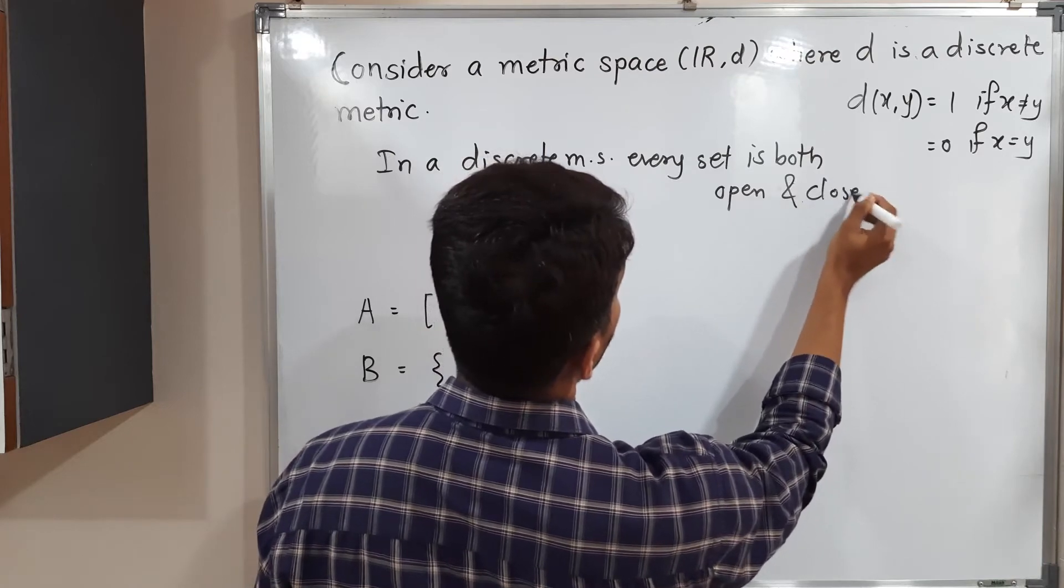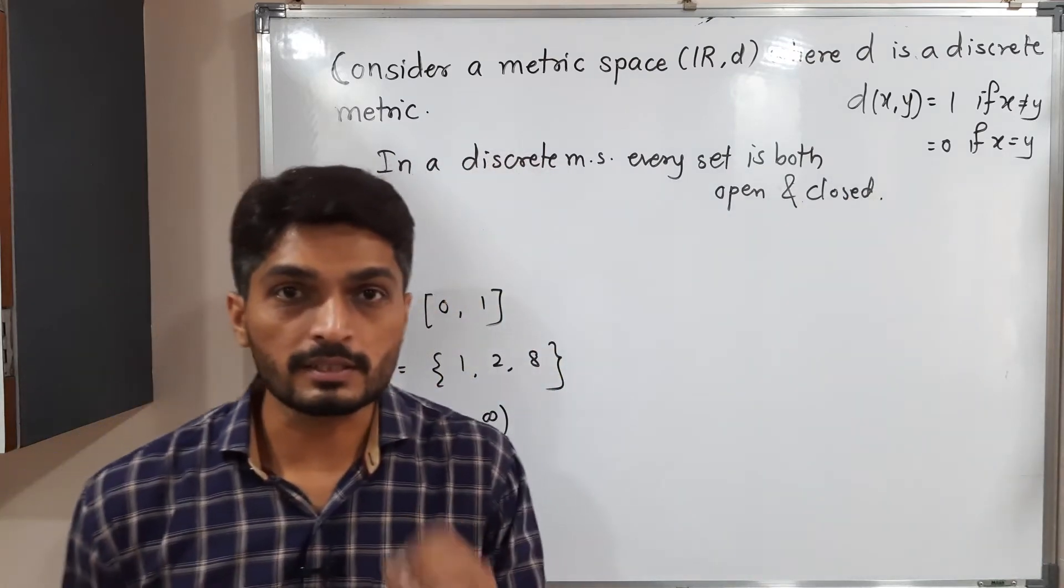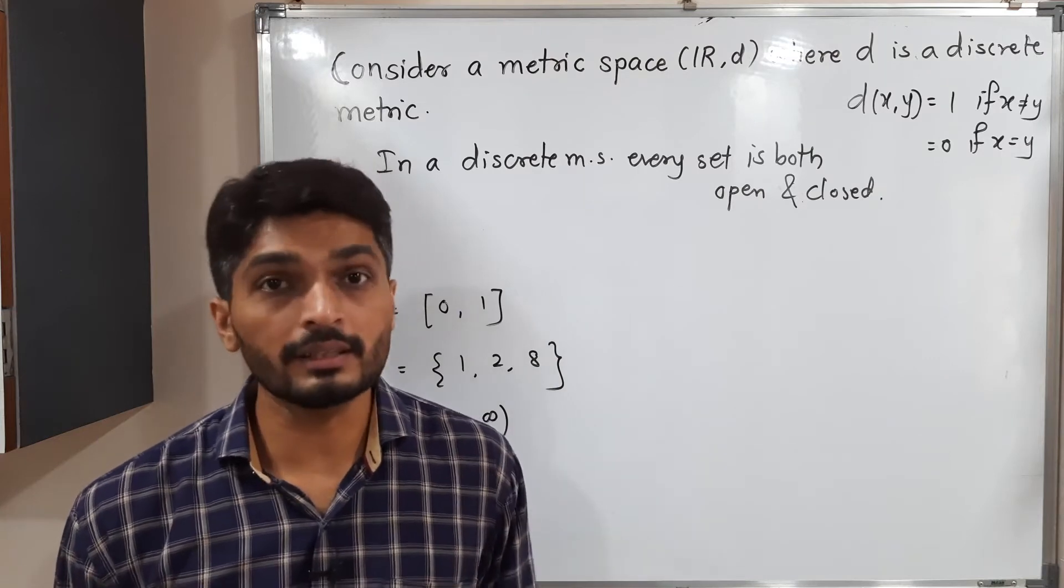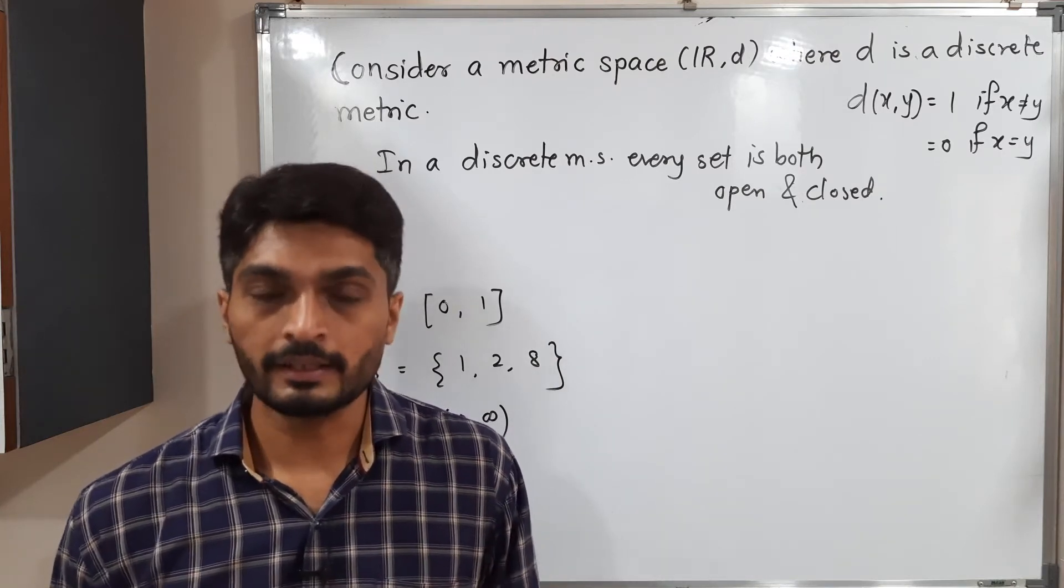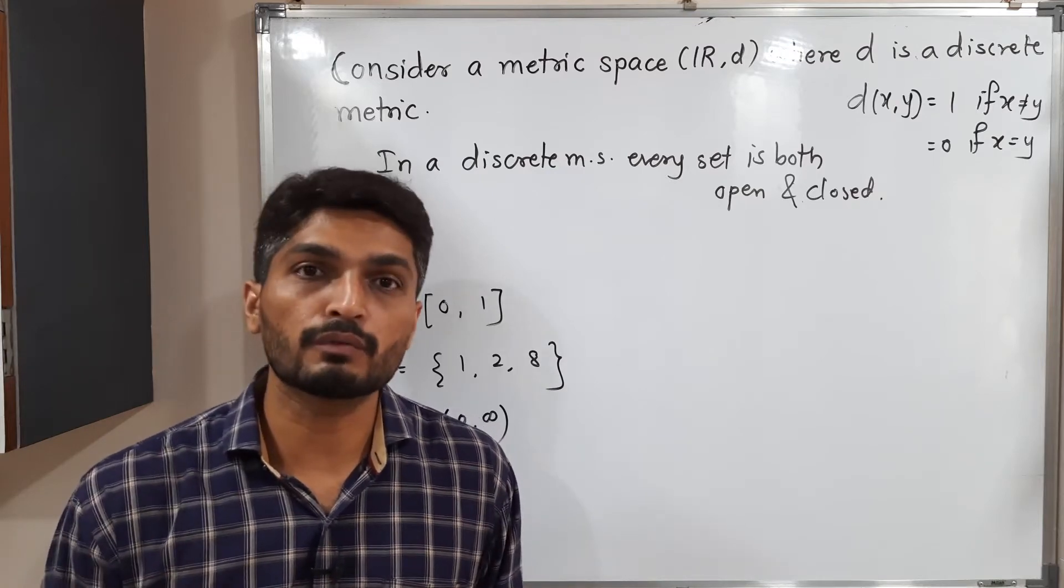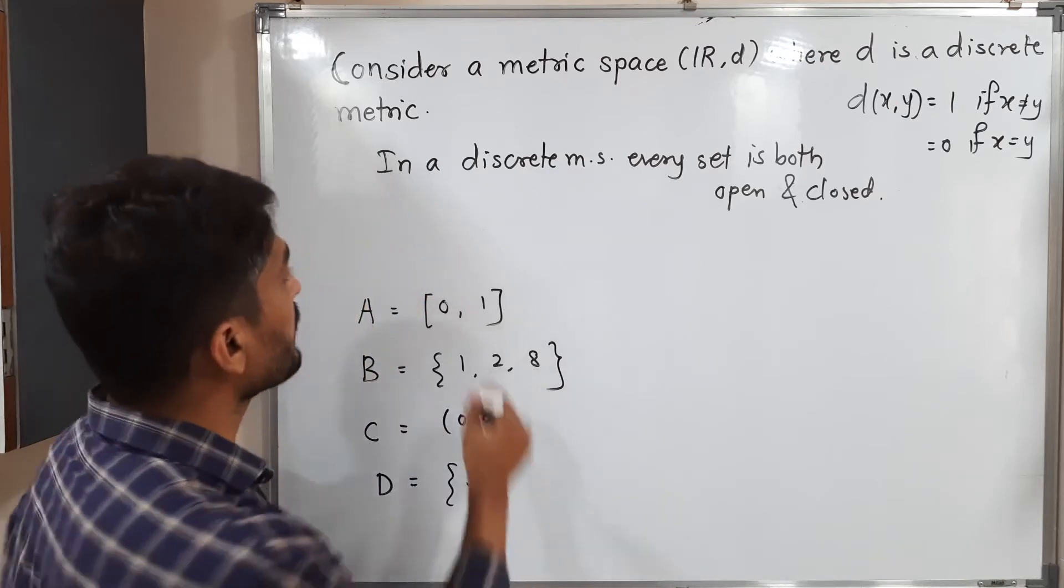With the help of this result, we have got one more result. In a discrete metric space, only singleton sets are connected and remaining sets are disconnected. In the previous video, we already proved it. So let me write that thing.